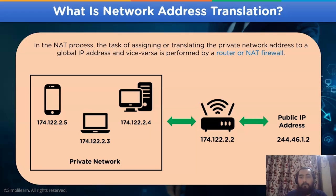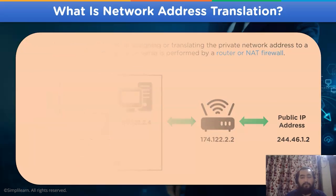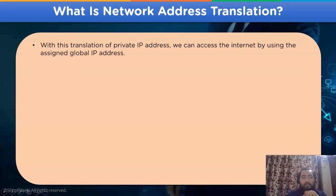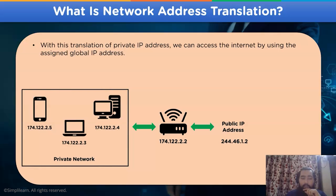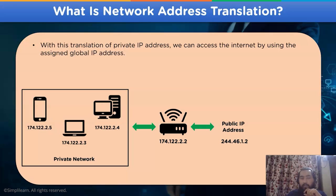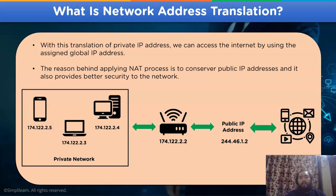This task is performed by a router or a NAT firewall. The router acts as an interface between the private network and the public network. The private network communicates with the router when it wants to access the Internet. When a public address wants to communicate with the private network, the router converts it to a private network ID. The reason behind applying NAT is to conserve public IPv4 addresses and provide better security to the network.